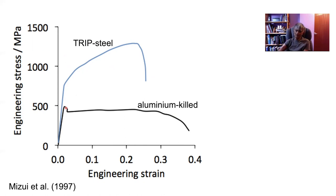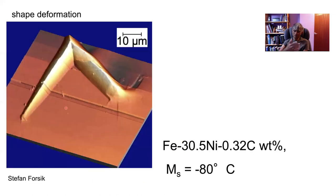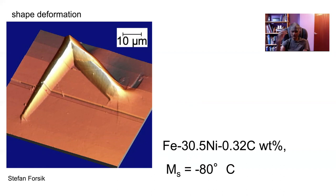Let's think about the shape deformation associated with martensite. This is a spectacular atomic force microscope image of the shear deformations produced by martensite plates. You can see the scratch has been deflected, and of course you have the surface topography which is obvious.